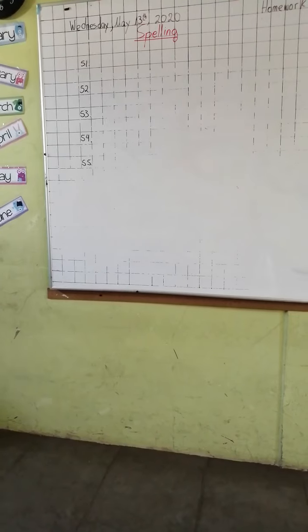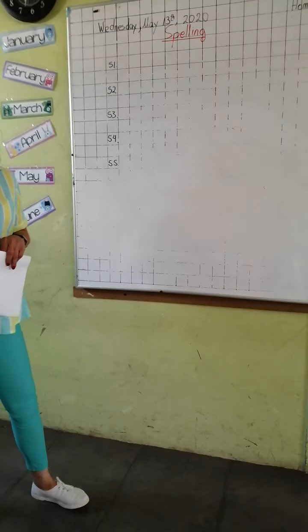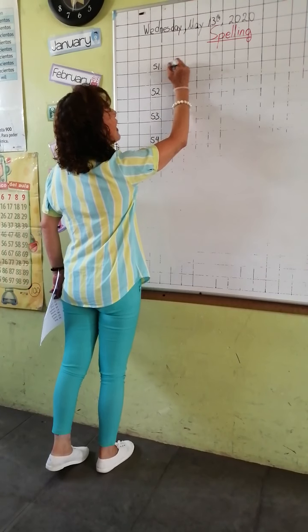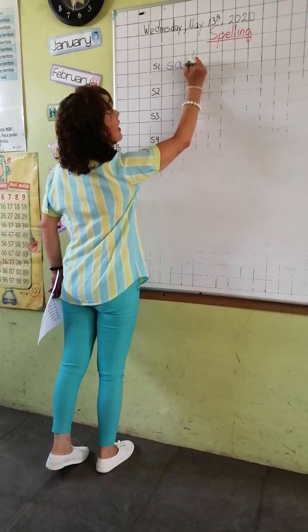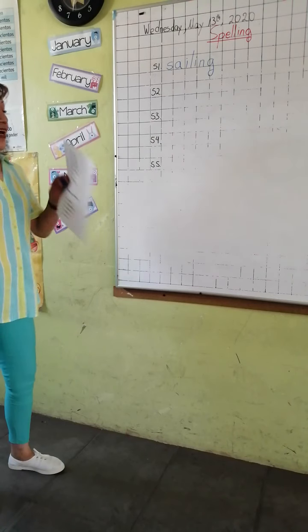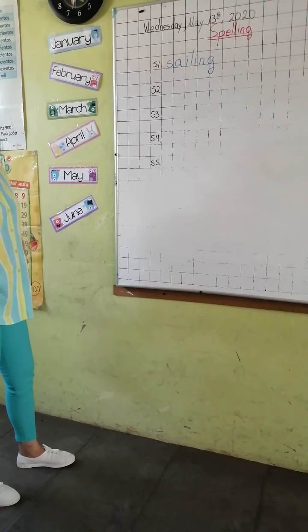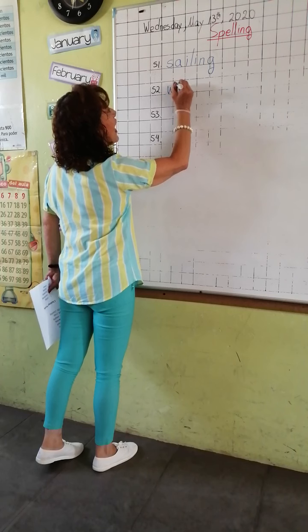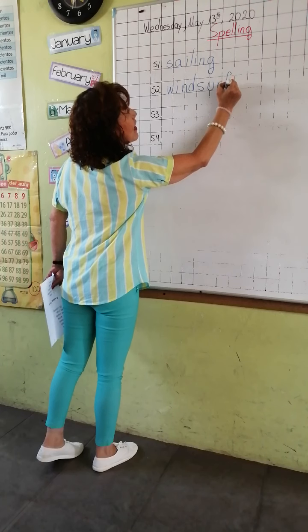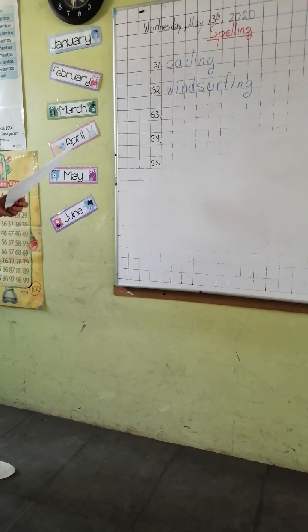Now you are ready to say the spelling words. The first word is sailing. Tell me the spelling of this word. S, A, I, L, I, N, G. Sailing. And the next one is surfing: S, U, R, F, I, N, G.